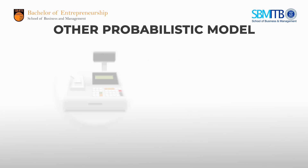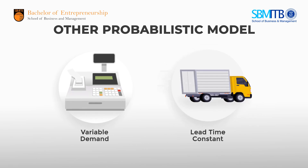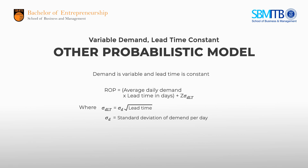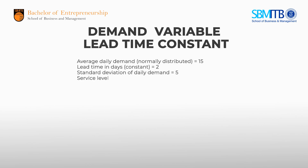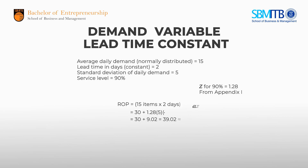When demand is variable and lead time is constant, we use this ROP formula. For example, if Linda has an average daily demand normally distributed at 15 pieces, a lead time of 2 days, and a standard deviation of daily demand of 5, with a 90% service level — so Z from the Z-table for 90% is 1.28 — then using the formula, we get a reorder point of 39 pieces.